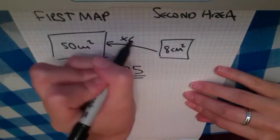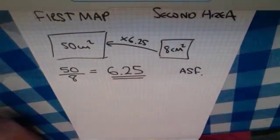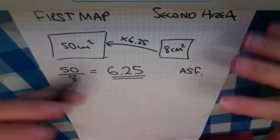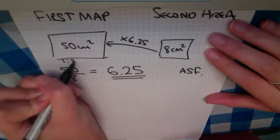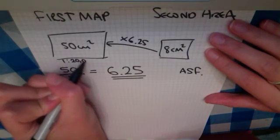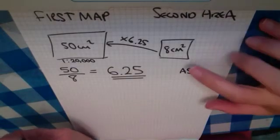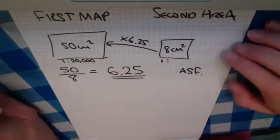So that is called the area scale factor. Now then, eventually our aim is to find the scale of this, which is all about length. Scale is all about length. This one's already got a scale of 20,000. It tells us that in the question. So we need to find this. We need to find that mystery number that would go here, 1 to whatever it is.